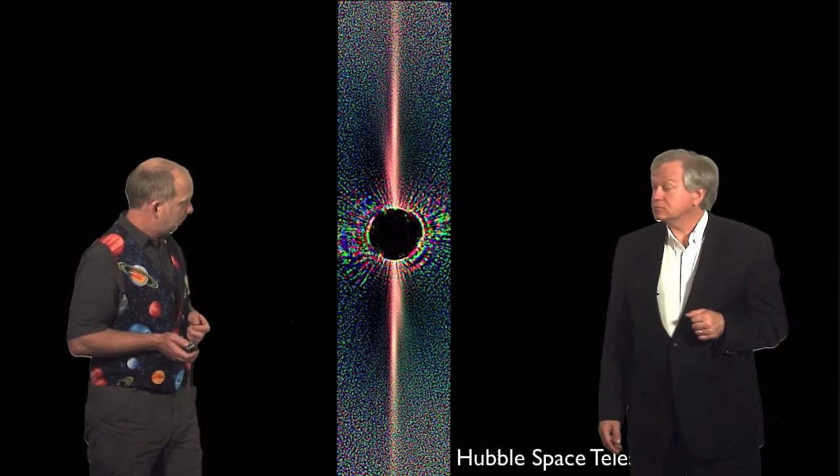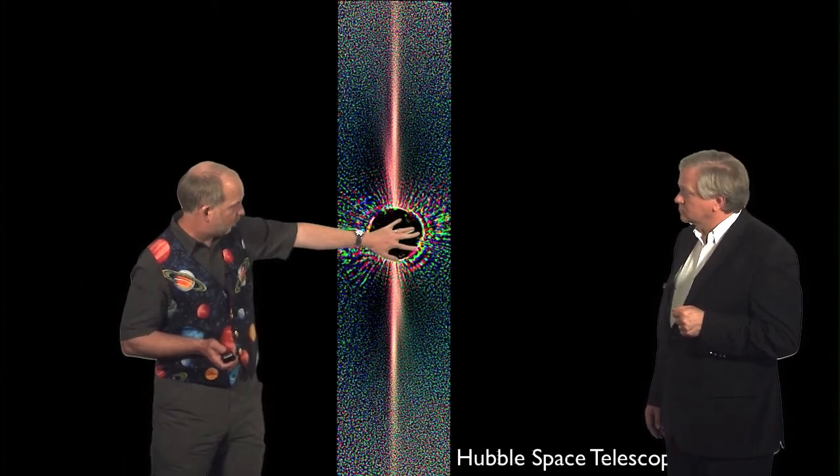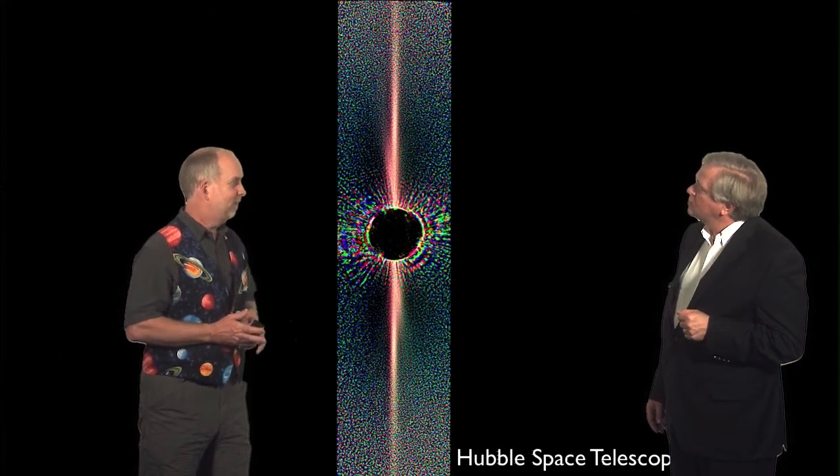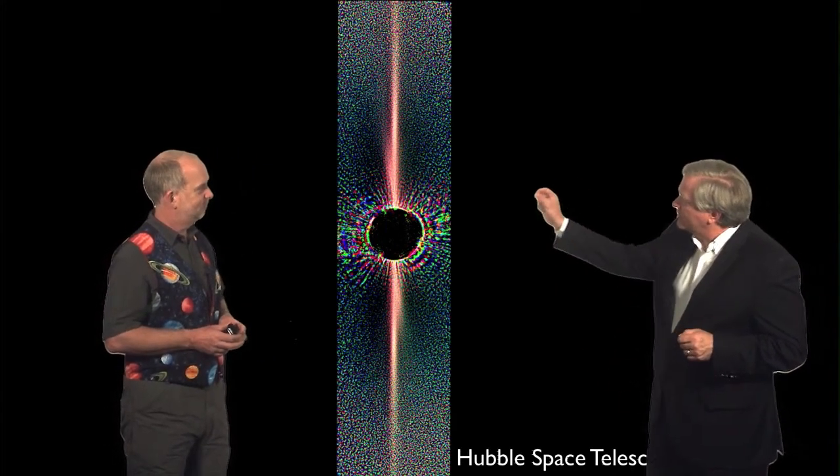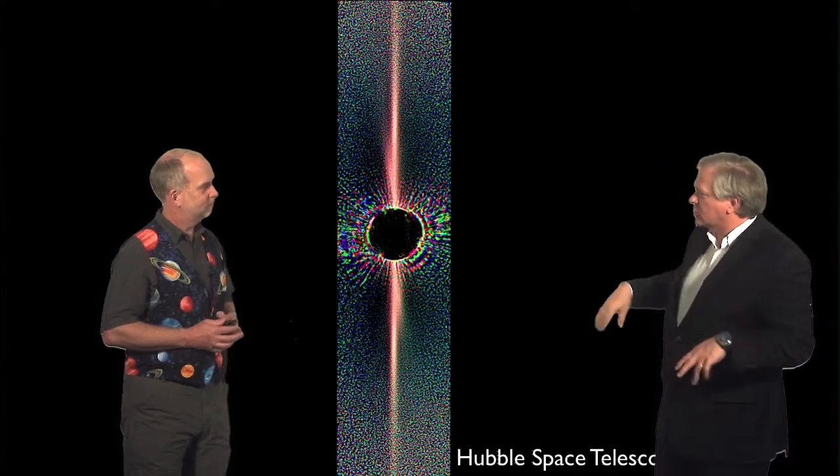So here for example is what's called a coronagraph image from the Hubble Space Telescope. They've blocked out the light from the star behind a little round disc here, and what you can see is it's coming from what looks like a line on both sides. Wow, so it's really a very thin amount of material. It's not a big circle around it.